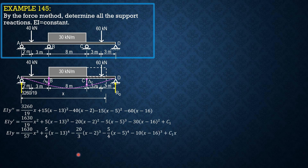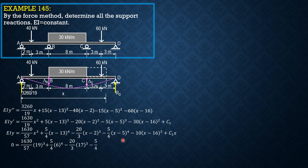Now let's apply the boundary condition: when x equals 19, y equals 0. So 0 equals (1630/57)(19)³ plus (5/4)(6)⁴ minus (20/3)(17)³ minus (5/4)(14)⁴ minus 10(3)³ plus C₁ times 19. From this we can solve C₁, which equals negative 111,672 over 19.